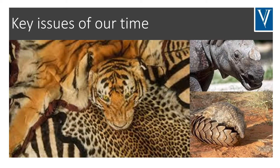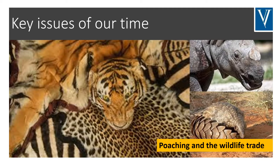Let's look at some of the key issues of our time. On the next few slides, you'll see some images and you want to see if you can associate these images with any environmental problems that you know about. Some of these problems may very well be the drivers for your interest in this subject. These images represent poaching and the wildlife trade, or the illegal wildlife trade, which is one major issue to do with conservation and biodiversity at the current time.